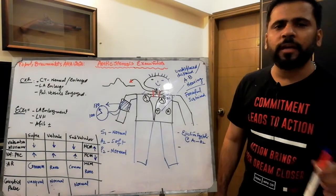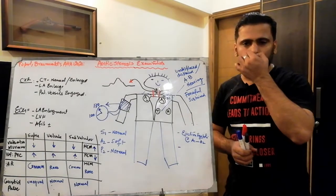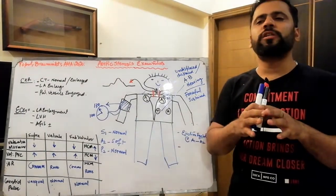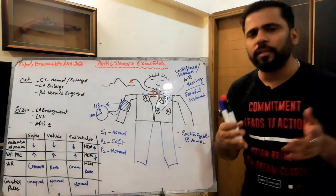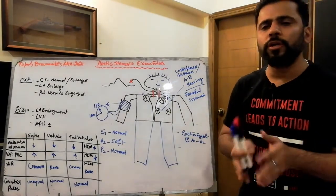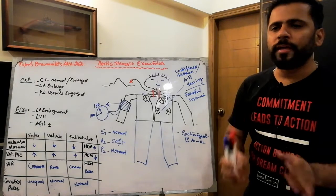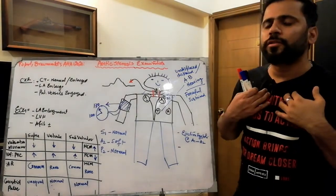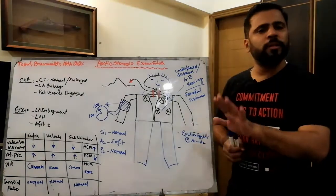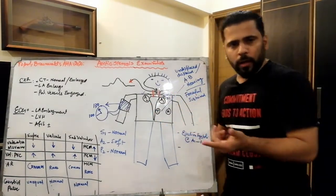Murmurs at the aortic area that do not radiate to the carotids are usually flow murmurs in aortic regurgitation, prosthetic valves, or aortic sclerosis. Aortic sclerosis is a process in elderly males — these patients do not have significant gradients or increased velocity across the aortic valve. If an elderly patient of 80 years has an ejection systolic murmur not radiating to the carotids, it could safely be called aortic sclerosis, and those patients will not have symptoms of aortic stenosis.